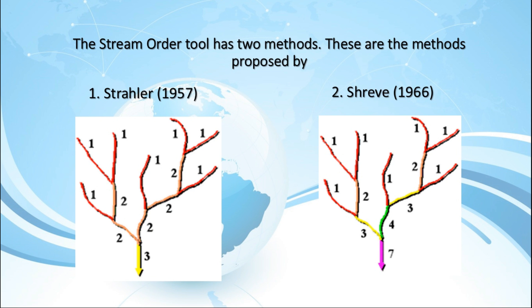The Shreve Method accounts for all links in the network. As with the Strahler Method, all exterior links are assigned an order of one. For all interior links in the Shreve Method, however, the orders are additive. For example, the intersection of two first-order links creates a second-order link, the intersection of a first-order and second-order link creates a third-order link, and the intersection of a second-order and third-order link creates a fifth-order link.